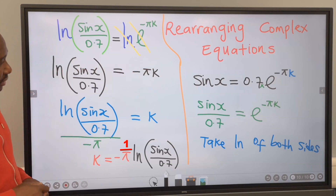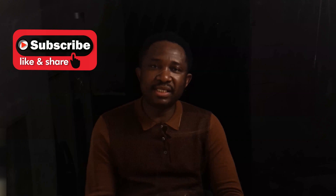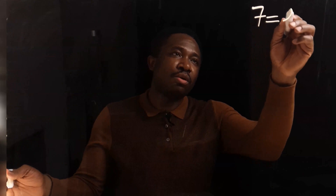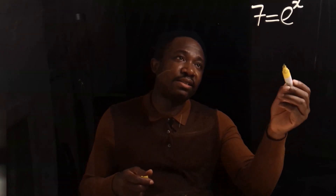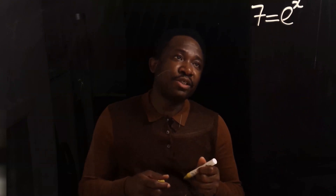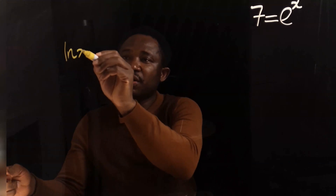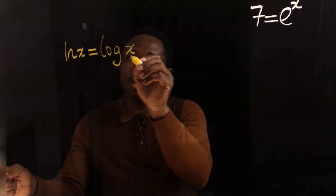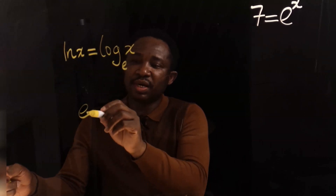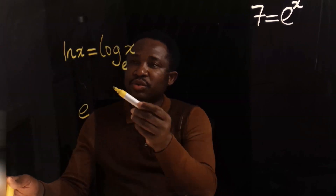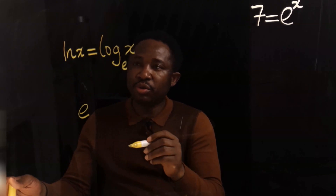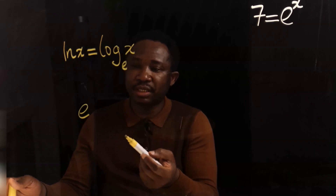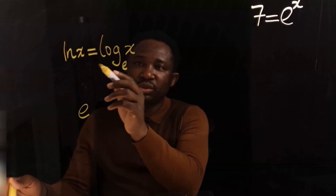We have successfully made k the subject in this equation. Now we're going to consider rearranging complex formulas. Consider 7 equals exponential x. Our aim is to make x the subject. But x is held by the exponential. In mathematics, whenever you want to release x from exponential, like in this case, you're going to introduce natural log.